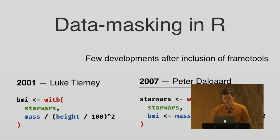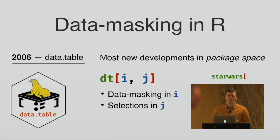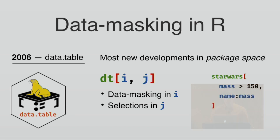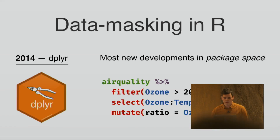The with function and the within function were included a few years later. But by and large, most of the developments happened in package space. In 2006, the data.table package was released, and one of the things it did — besides performance — is that it allowed you to use data masking in `i` to subset rows, and data masking in `j` but also selections to select columns. Then in 2014, dplyr was released, very similar to the ideas that were in the frametools package, but with the objective to really push data masking in a much more comprehensive API.